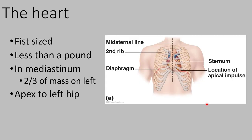The heart is right in the middle of the chest, not on the left side as many people think. It's about the size of your closed fist, maybe slightly bigger, and typically weighs less than a pound. It sits between your lungs, right below the throat, in a cavity called the mediastinum — that is where the heart is found.